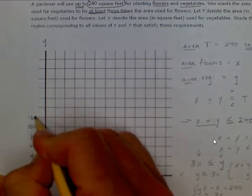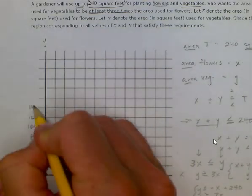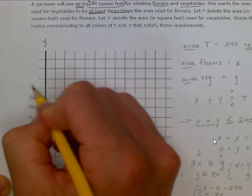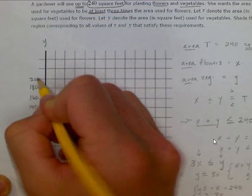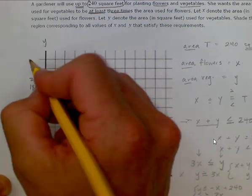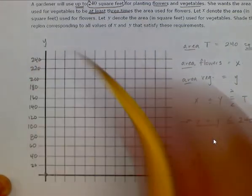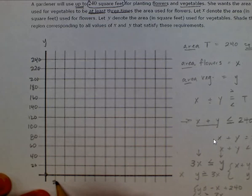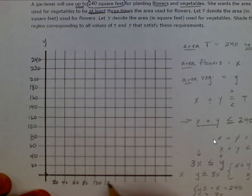Labeling the y-axis: 140, 160, 180, 200, 220, and 240. And to make it consistent, the x-axis is also labeled in increments of 20: 20, 40, 60, 80, 100, 120, and so forth.